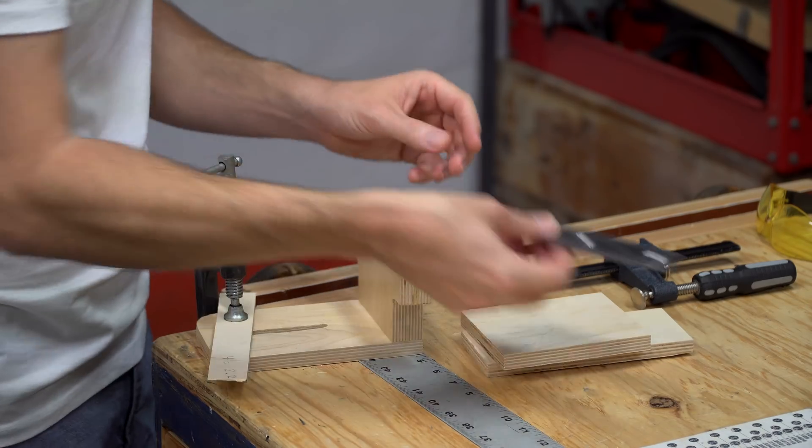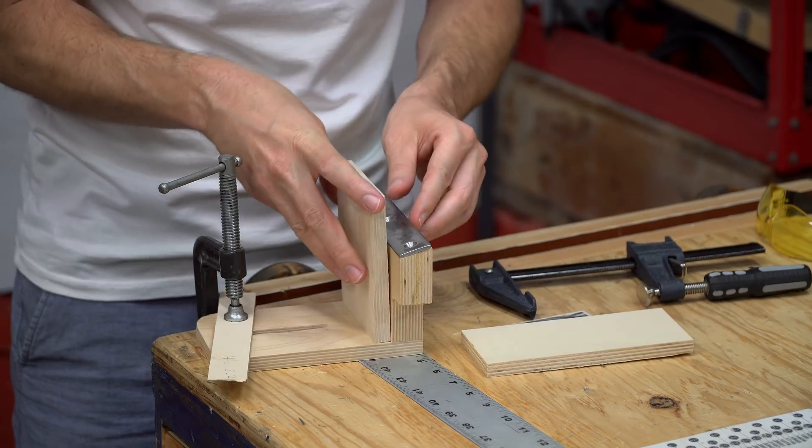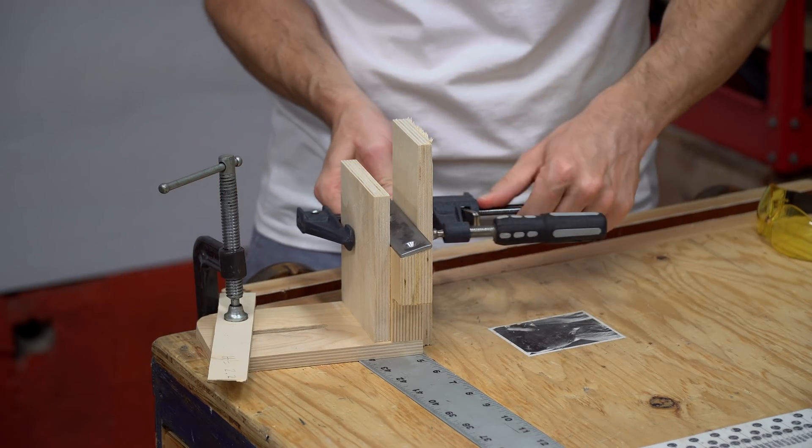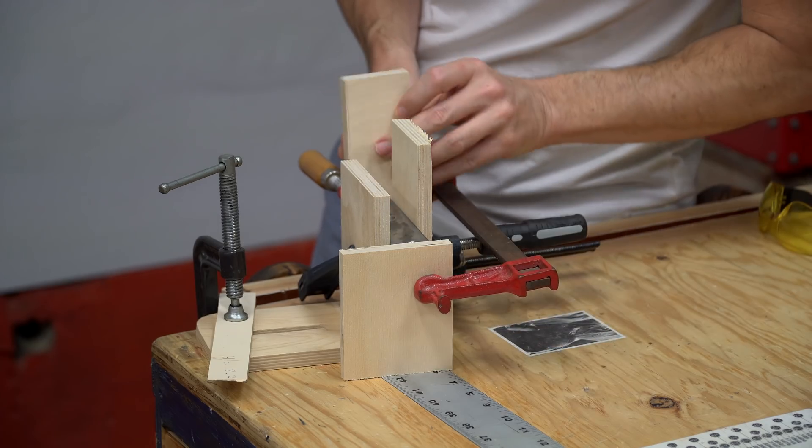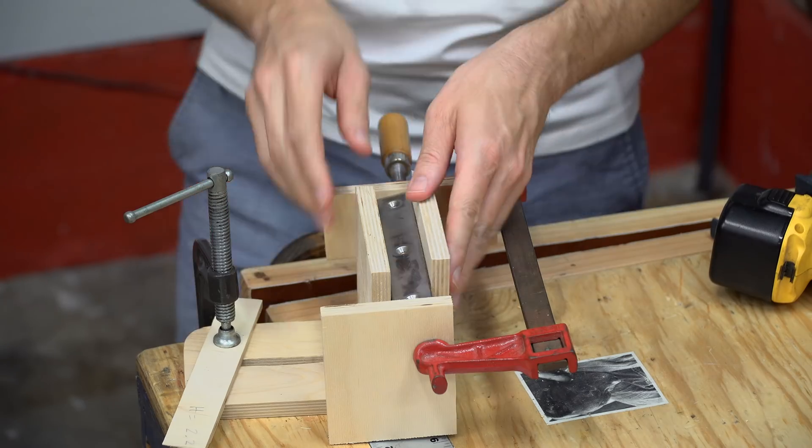I wasn't 100% sure how I was going to keep the metal strip centered on the tool rest while I drilled pilot holes and added the screws. Then I came up with the idea to just clamp four pieces of wood all around it so it couldn't move in any direction.